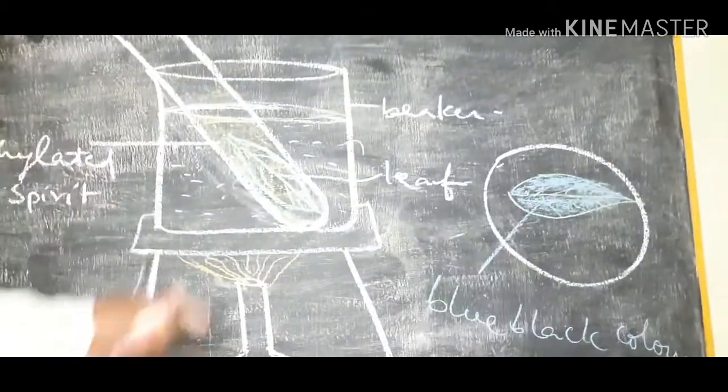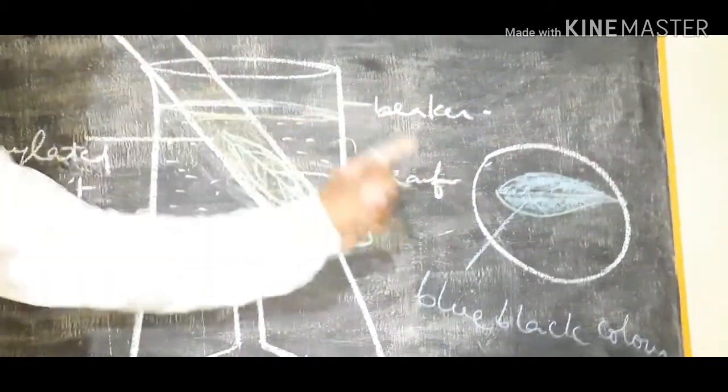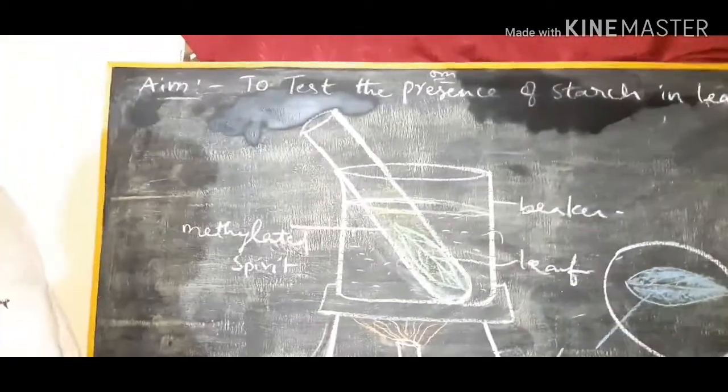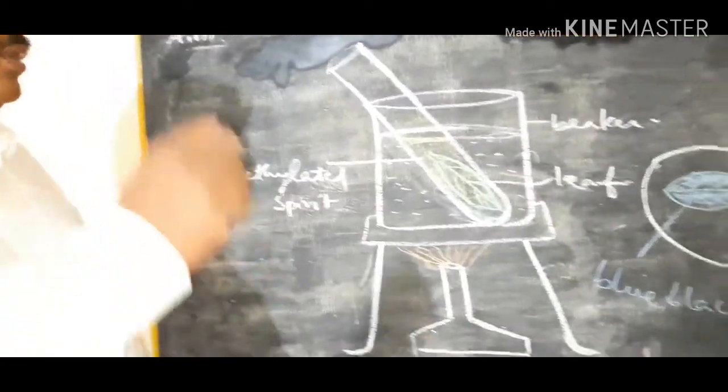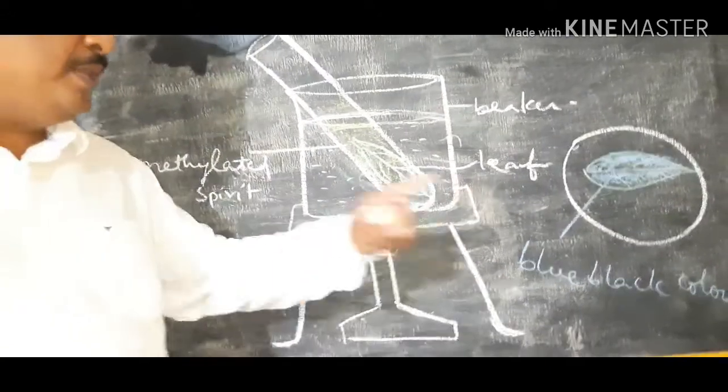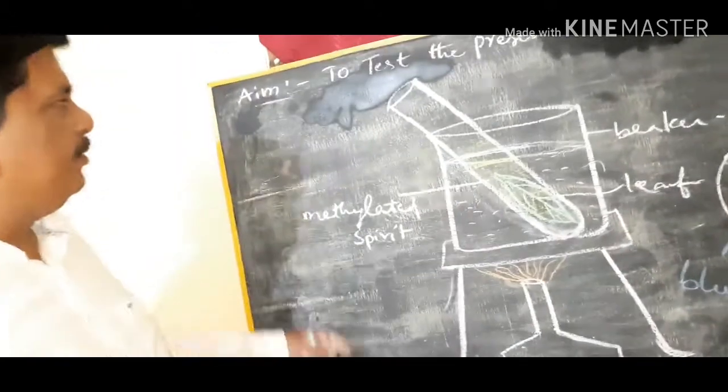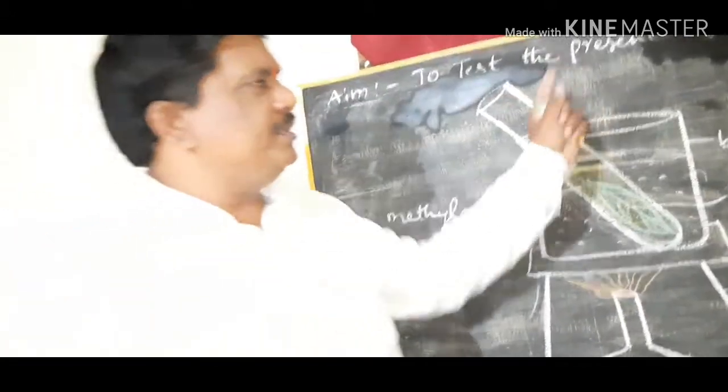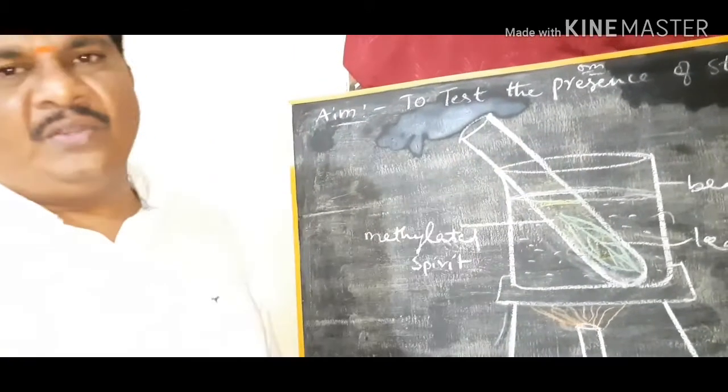The presence of blue-black color by adding iodine will indicate the presence of starch. When you add iodine to starch, it turns into blue-black color. By this experiment, we came to know that starch is present in the leaves which is formed during photosynthesis.